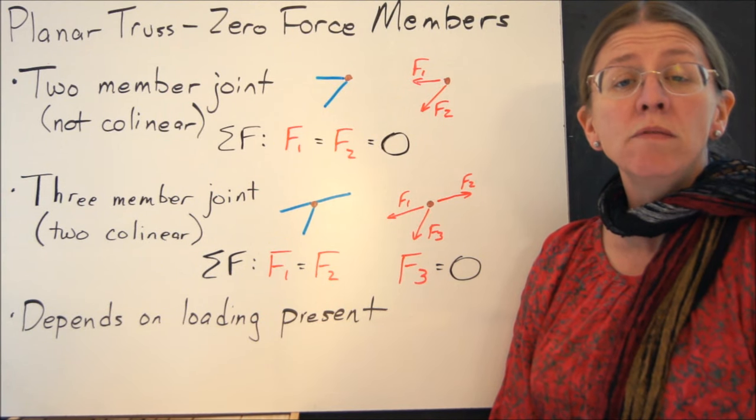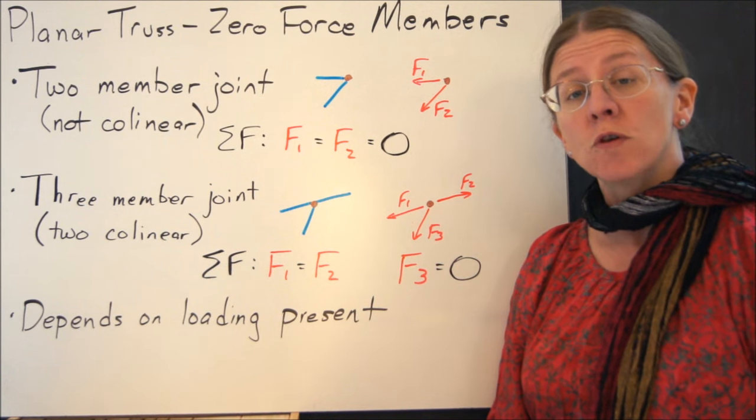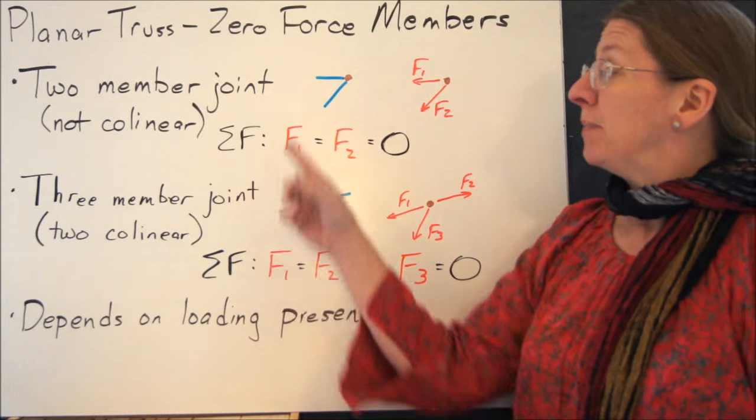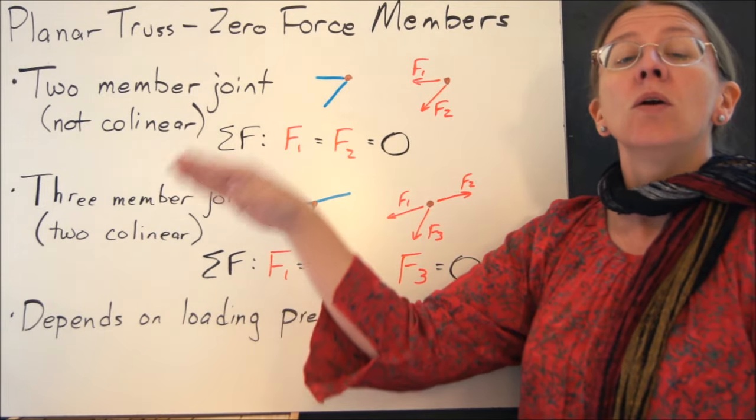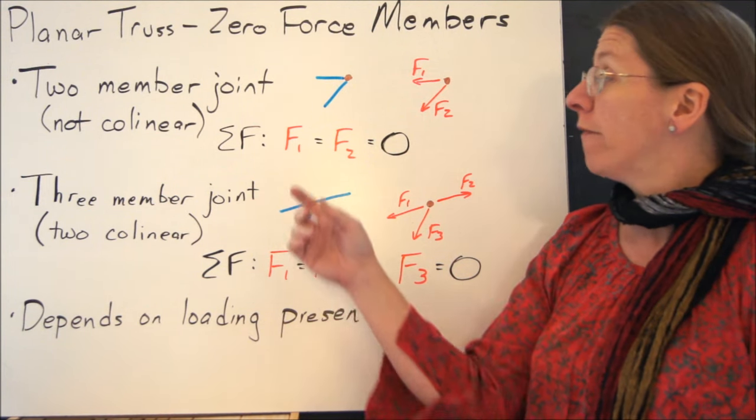When we're dealing with planar trusses, one of the things that can make your job easier is to learn what makes a zero force member. In general, once you've got this truss going on, if you look at any individual joint, there are two different cases where you can know already that one of the members at that joint is going to be zero, or more of them.